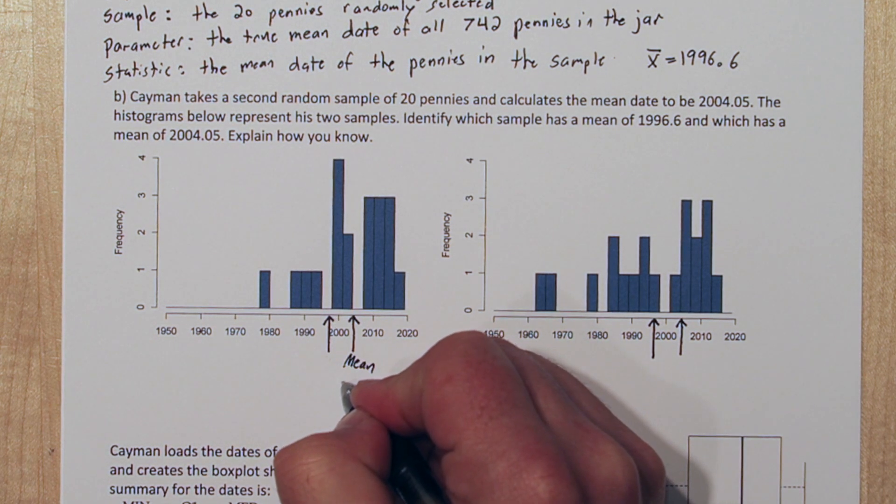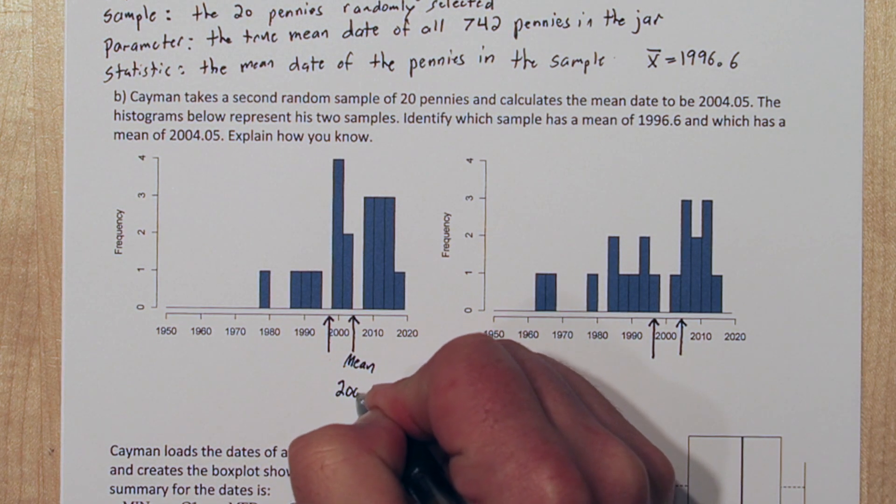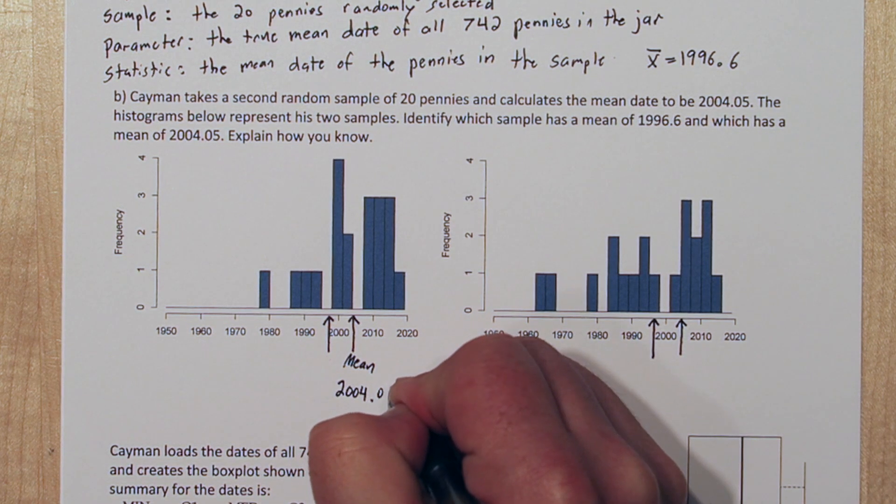So the mean of this sample is the greater value, 2004.05.